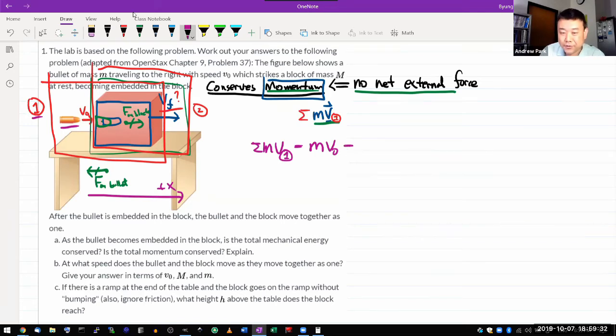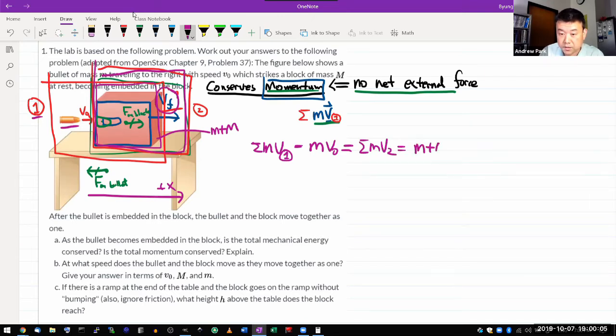That's going to be equal to the total momentum in snapshot two. In snapshot two, something is moving at V final. This is where you have to be careful. What is moving isn't just the block. It's the block plus the bullet. So this mass here really is small m plus the big M.